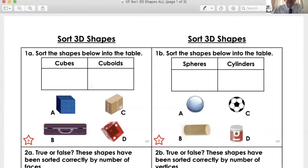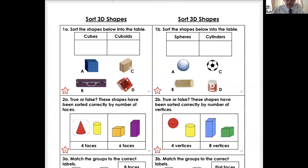What we're going to do now is have a look at the work you're going to do. Let's see if I can find it straight away. Here it is. Sort the shapes below into the table. Cubes. This side. Cuboids. That's the ones which aren't squares. So B is not a square, so it goes in there. C is not a square, it goes in there.